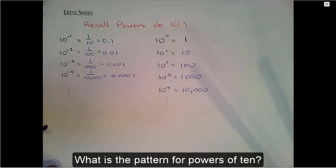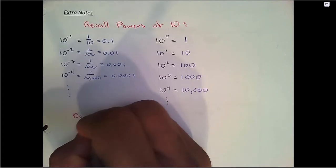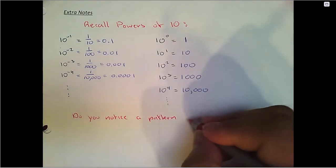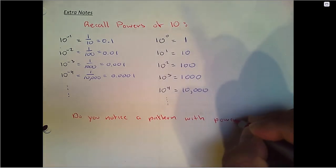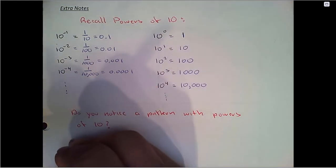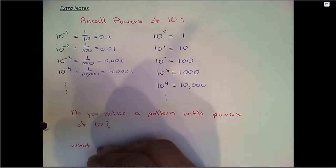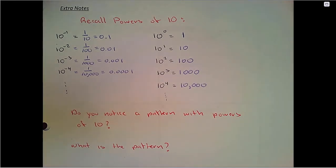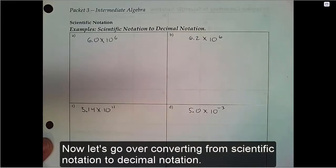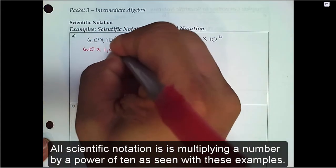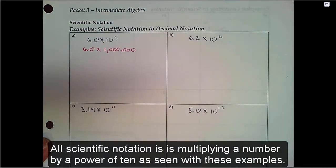What is the pattern for powers of 10? Now let's go over converting from scientific notation to decimal notation. All scientific notation is is multiplying a number by a power of 10, as seen with these examples.